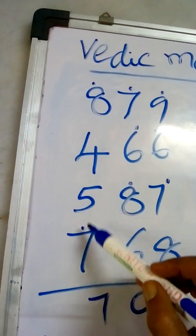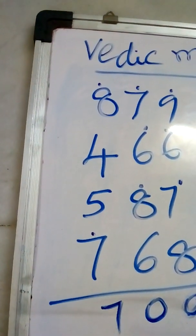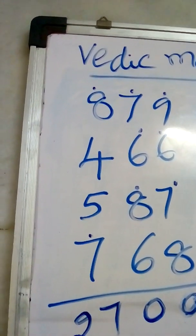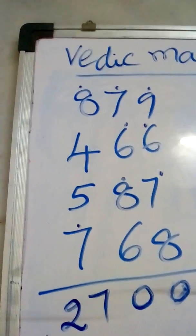And 1, 2. 2 dots are there. That means 27. 2,700, the answer.